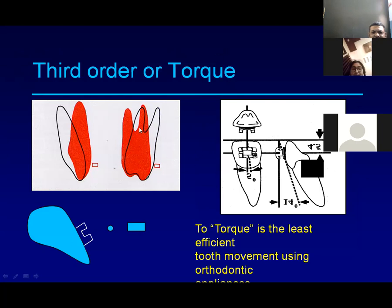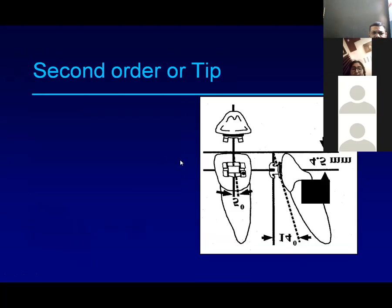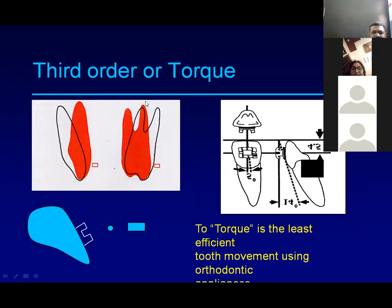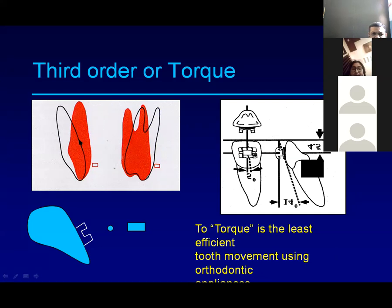Third order bends are used to correct root position — also called torque. While second order corrects crown angulation, third order moves the root in the buccal or lingual direction. For example, if the central incisor root needs to be upright, you add more angulation (torque) into the arch wire. The same applies to molar torque — by adding torque into the molar tube, the root becomes upright. Torque is the least efficient movement in conventional edgewise appliances.